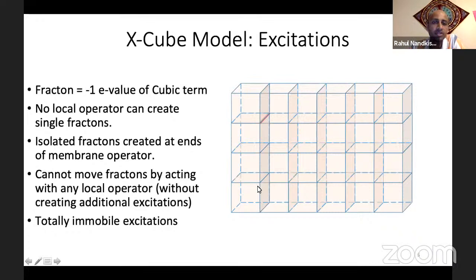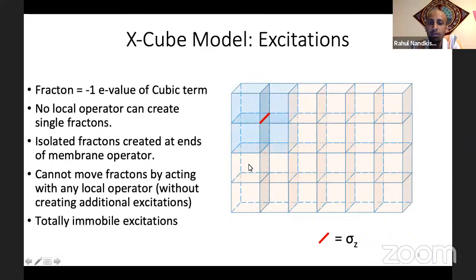Now suppose we act with a Z operator on a single link. The B operators are made of Z's, so it commutes with those. The A operators are made of X's, so it anti-commutes with every A operator which shares this link, which means it flips the sign of these four A operators. Each of these four cubes previously had eigenvalue plus one; now they have eigenvalue minus one — these are excited. Now, let's imagine acting with two Z's: the two cubes on the one end are anti-commuted with once, so they're unhappy. The two cubes in the middle have two anti-commutations, so they're happy again. But then there are two more cubes which are unhappy.